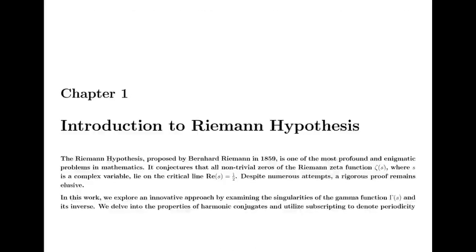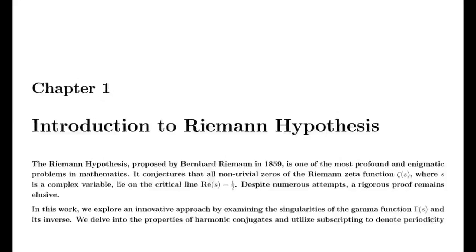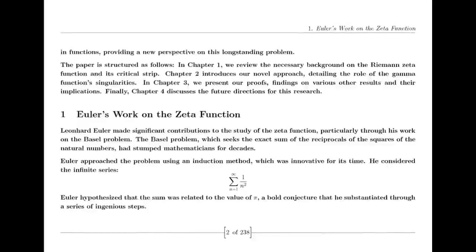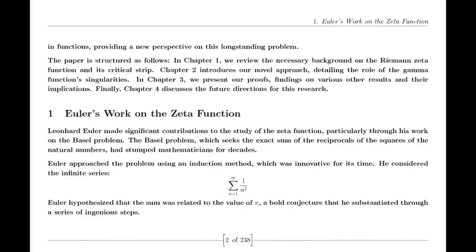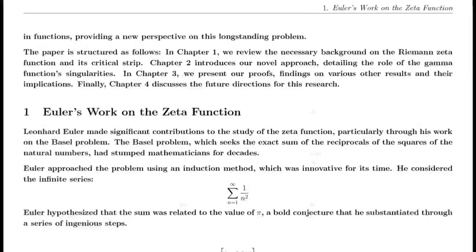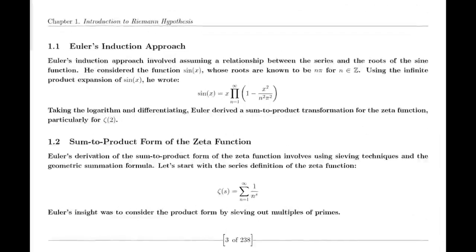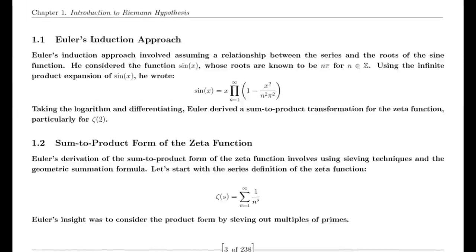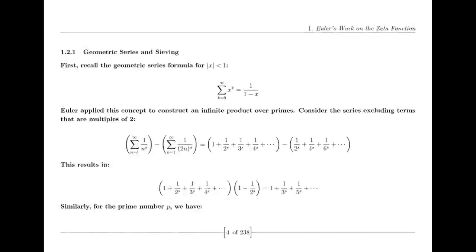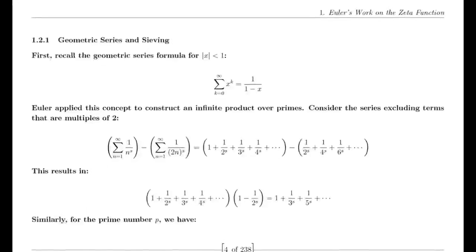Reflection Properties. One of Riemann's major discoveries was the reflection formula for the zeta function. This formula demonstrates a symmetry between the values of the zeta function at s and 1 minus s. Specifically, it shows that ζ(1−s) can be expressed in terms of ζ(s) using factors involving π, the Gamma function, and trigonometric functions. This reflection formula is fundamental to the theory of the zeta function and provides deep insights into its structure.